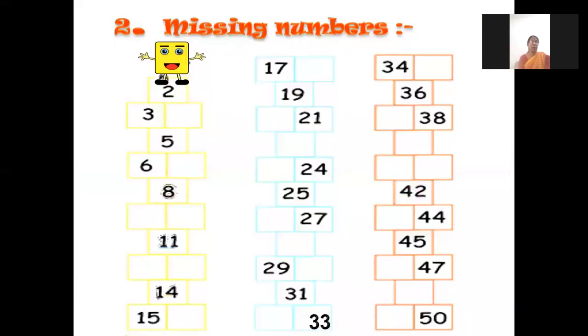Good job! Next — missing numbers. Just see what ma'am has written and what we have to write. It is written 2, so we will write first 1: 1, 2, 3. What will come after 3? 4, 5. 6 is written, now it will come 7. It is written 8, after 8 will come 9, then 10.